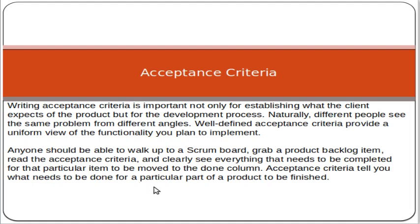Acceptance criteria tell you what needs to be done for a particular part of a product to be finished. Many times it happens that due to the unavailability of acceptance criteria, we can't close things — we can't say that this is finished. If you have clearly written acceptance criteria, any person can read the user story and, based on the acceptance criteria, decide whether the user story has been successfully delivered to the customer. This shows how important it is to clearly define acceptance criteria.